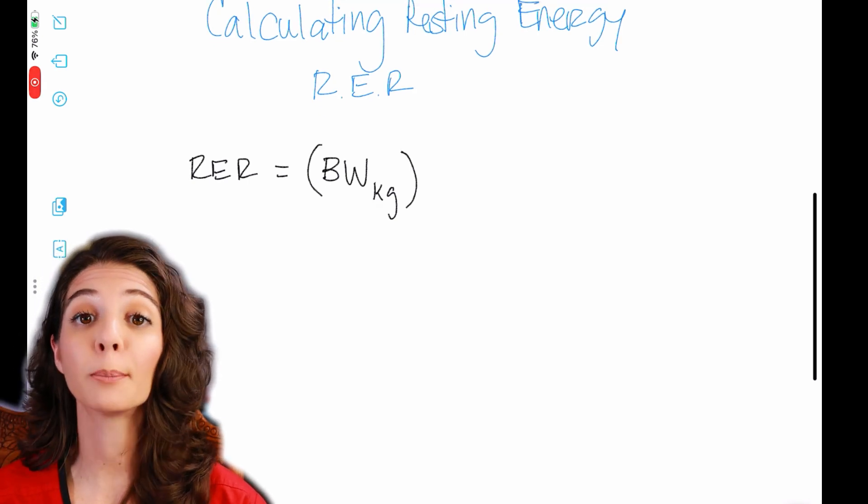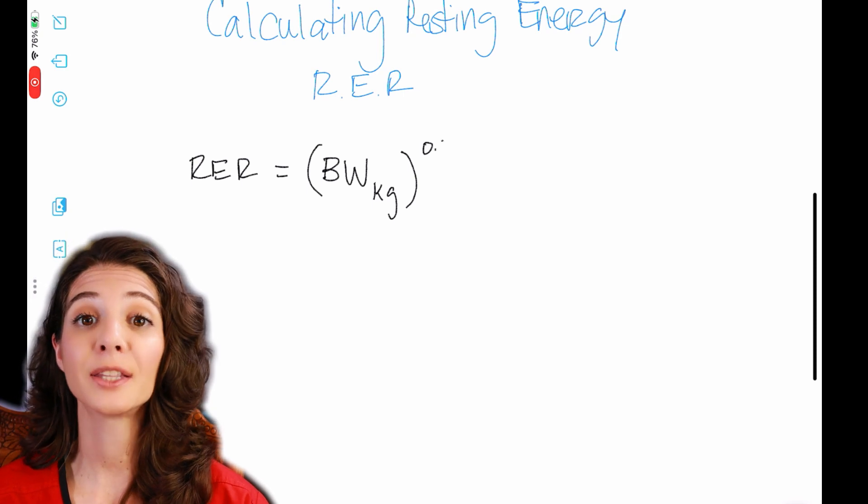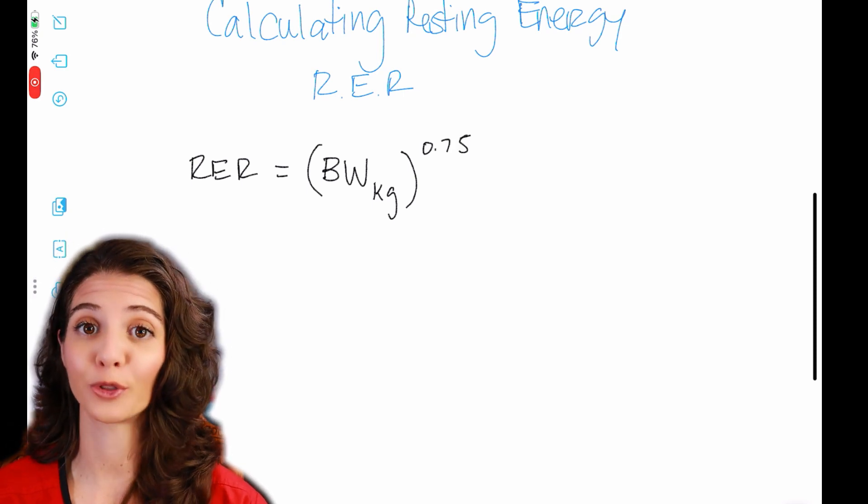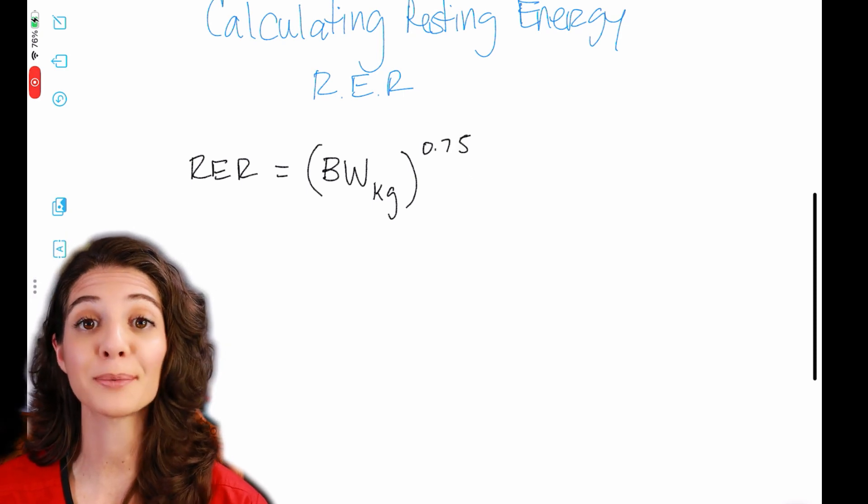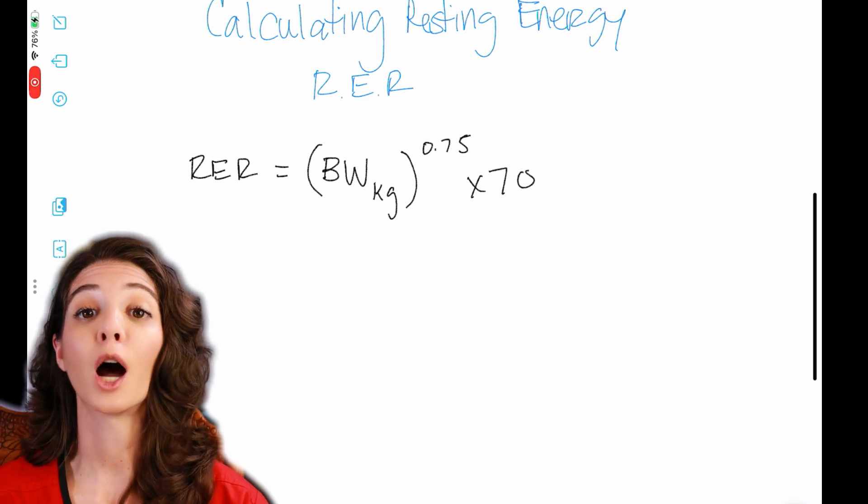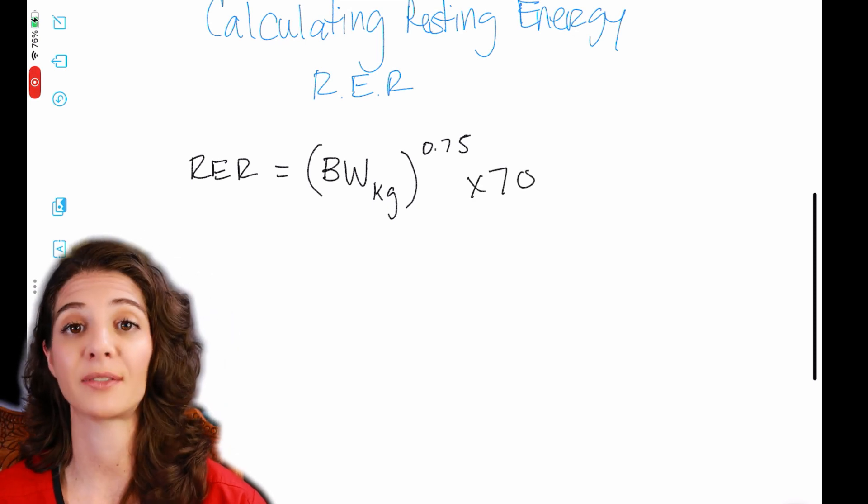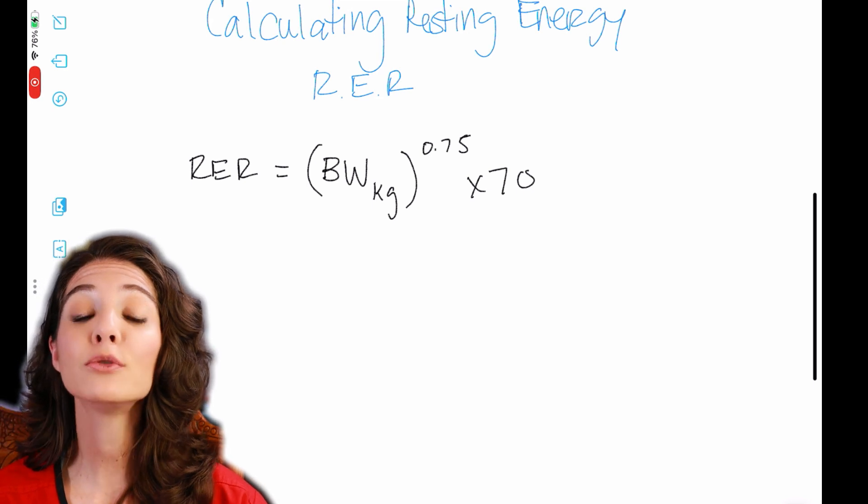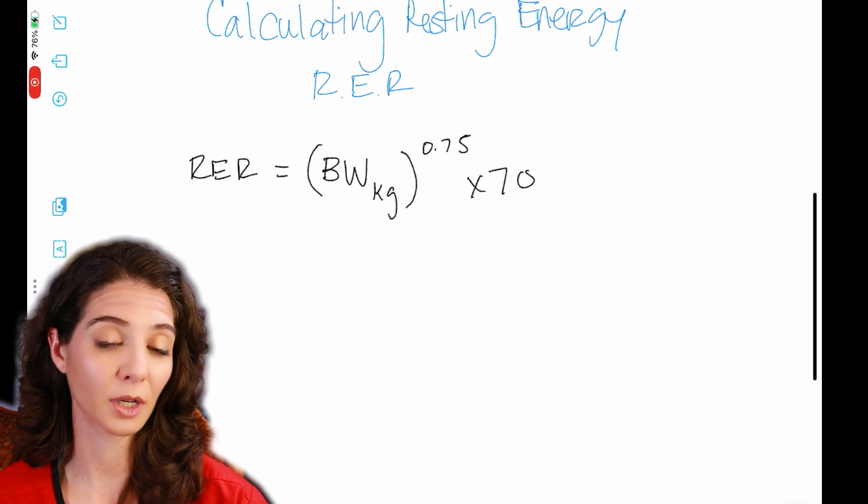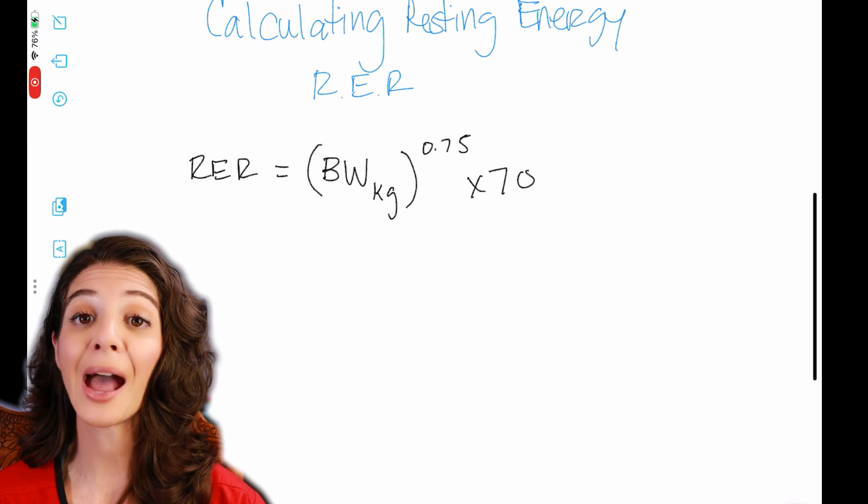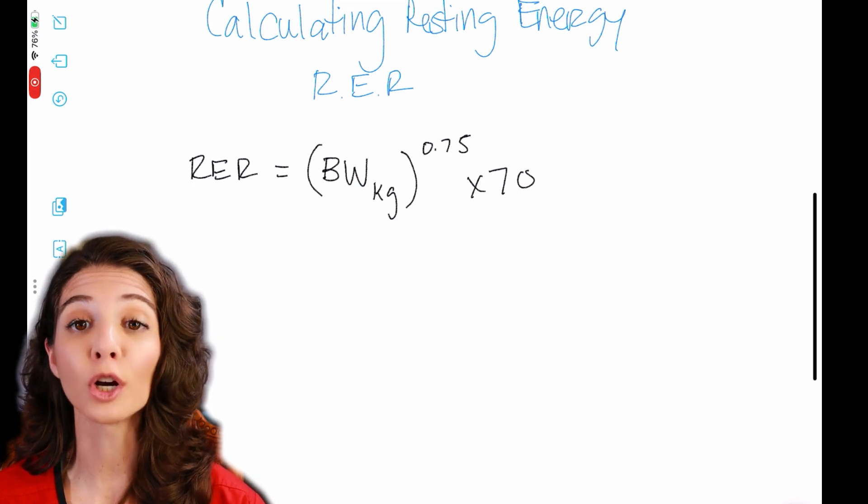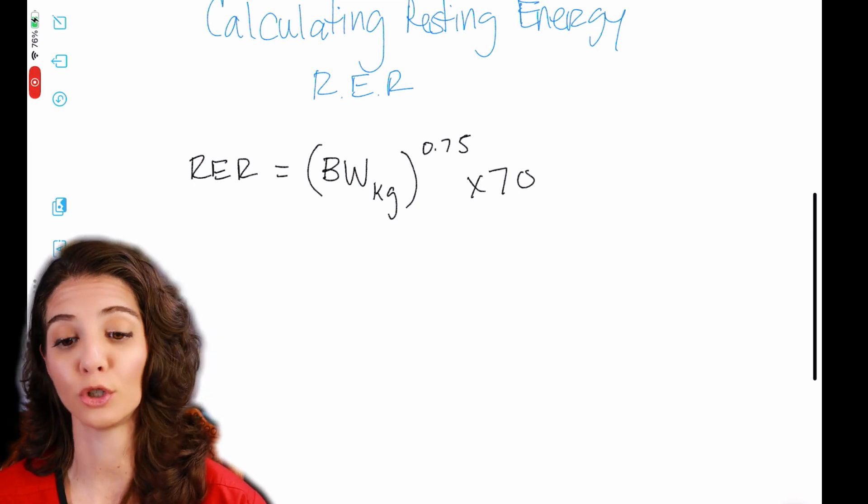Okay. So what is the calculation for resting energy requirement? Resting energy requirement, which we're going to abbreviate as RER, is the body weight in kilograms. So for those of you in countries that already use kilograms, it's going to be way easier for you, to the 0.75 exponent times 70.